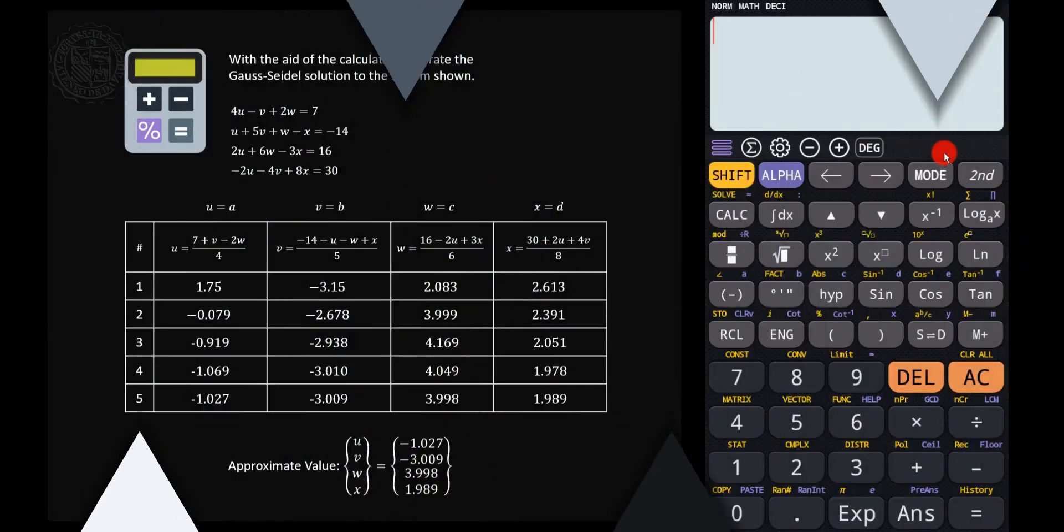So let us open the Android-based calculator and then let us now input or type the equation in terms of a, b, c, and d. For the first equation, we have a is equal to, so we have alpha a is equal to, and then 7 plus v but v is equal to b, so we input alpha b, then minus 2w but w is equal to c, so let's input alpha c over 4.